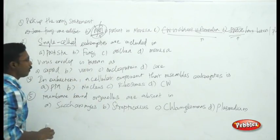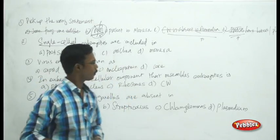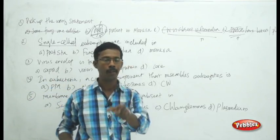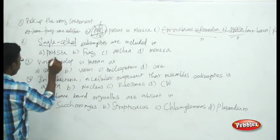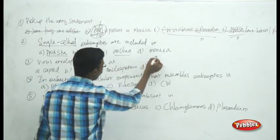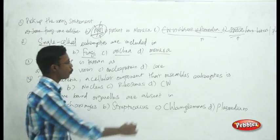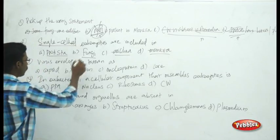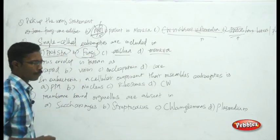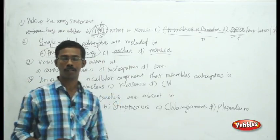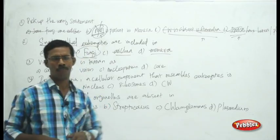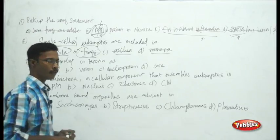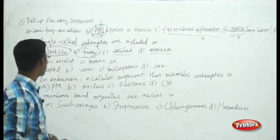The next question: single-celled eukaryotes are included in — Protista, Fungi, Archaea, or Monera? Monera includes prokaryotes; Archaea belongs within Monera. Fungi also have multicellular structures like mushrooms. Single-celled eukaryotes are grouped into the kingdom Protista.